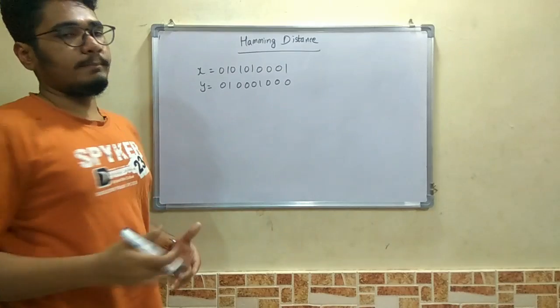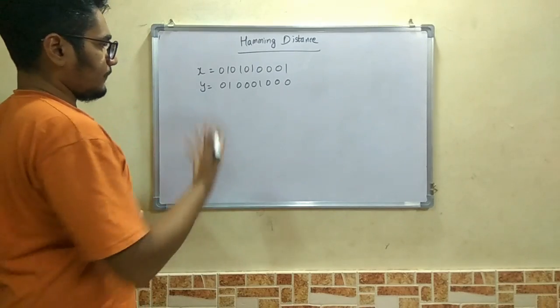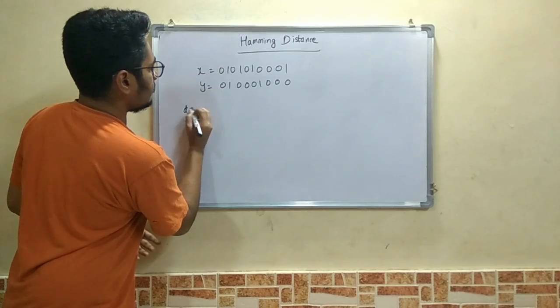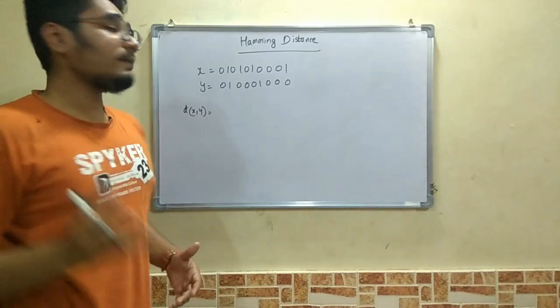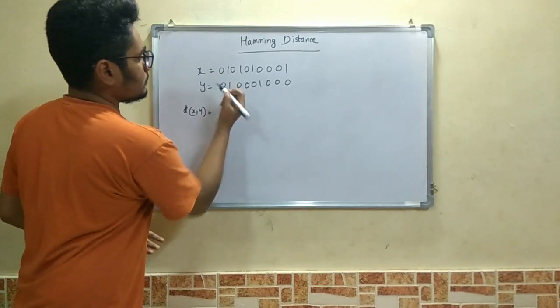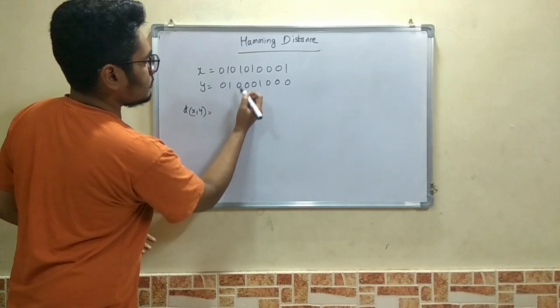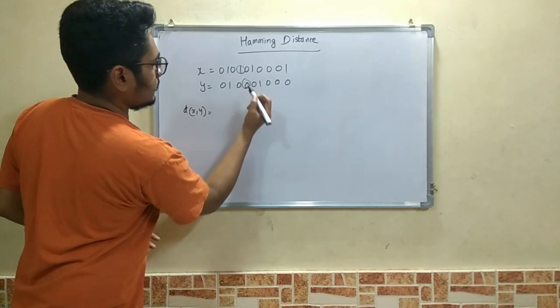Mainly this binary calculation comes into picture. We calculate the distance between these two points, the Hamming distance, as the change in their bit positions. This first bit is same, second bit is same, third bit is same, fourth bit is different.